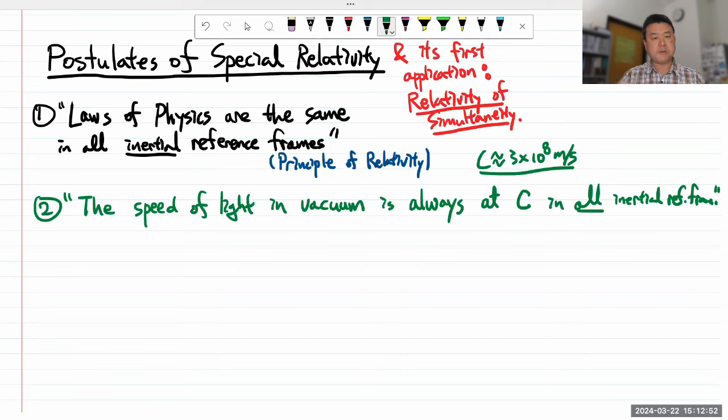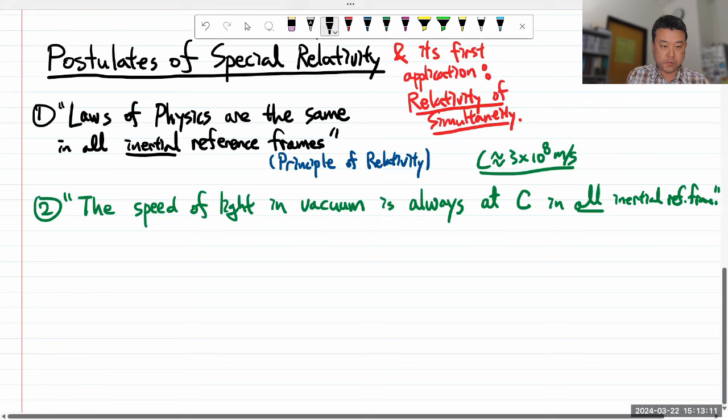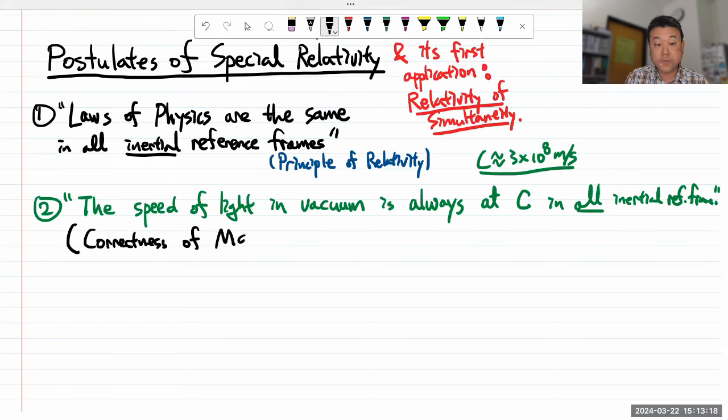One might think that's a kind of an odd and specific thing to say, unless you heard about it before from popular science or not. So the way I like to call this, the way to give it a succinct name that I hope people will remember is this name: I like to call this correctness of Maxwell's theory of electrodynamics.